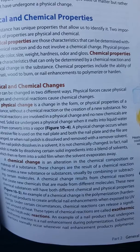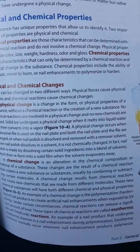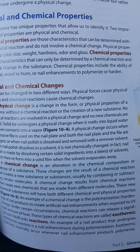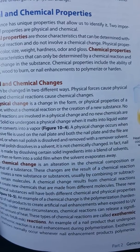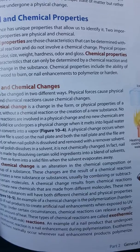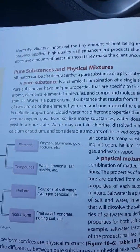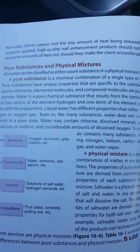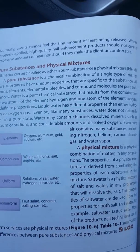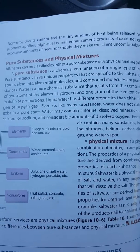Under certain circumstances, chemical reactions can release a significant amount of heat. These types of chemical reactions are called exothermic. An example of a nail product that undergoes an exothermic reaction is a nail enhancement during polymerization. Exothermic reactions normally occur when nail enhancement products are polymerized. Normally, clients cannot feel the tiny amount of heat being released. When properly applied, high quality nail enhancement products should not create excessive amounts of heat, nor should they make the client uncomfortable.